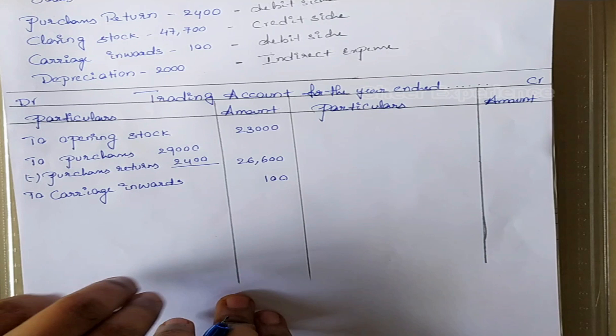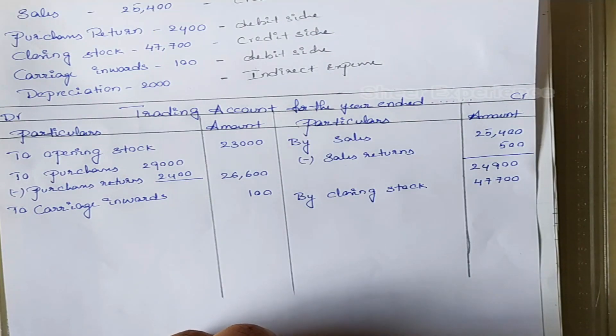Net purchase value is 26,600. Sales, sales returns, and closing stock are mentioned on the credit side. Here also we are deducting sales returns from sales to get the net sales value. Net sales value is 24,900.